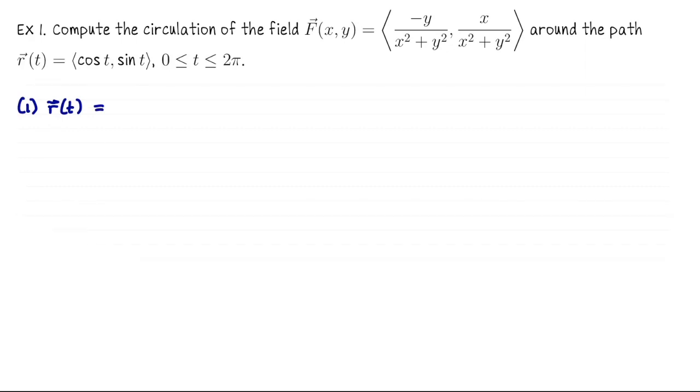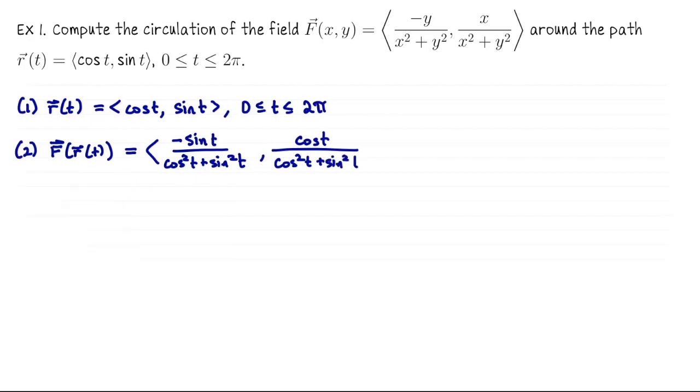Okay, so our first step is to identify our parametrization r(t). In this case we're going once around the unit circle. Next we want to plug our parametrization into our vector field. So evaluating this vector field along this path, we get negative sine(t) divided by cosine²(t) plus sine²(t), comma, cosine(t) divided by cosine²(t) plus sine²(t). The denominators are 1, so this simplifies to just negative sine(t), cosine(t). Now let's compute the velocity vector r'(t).